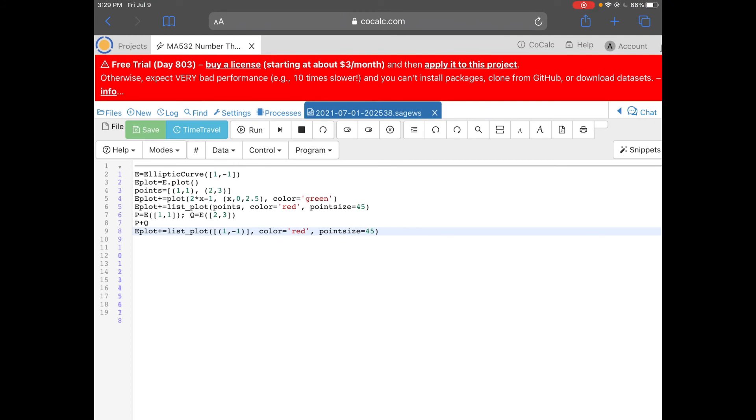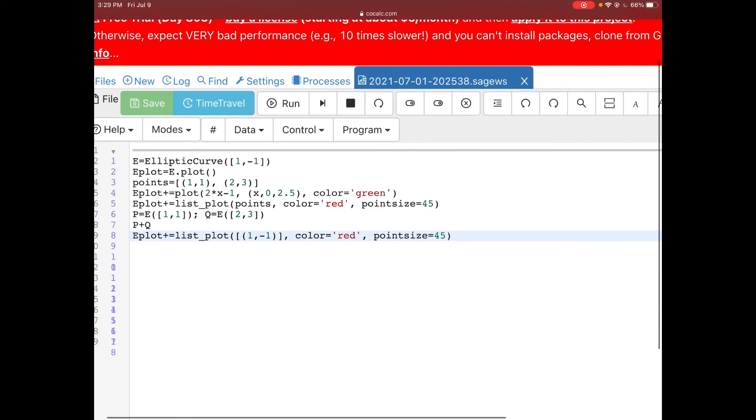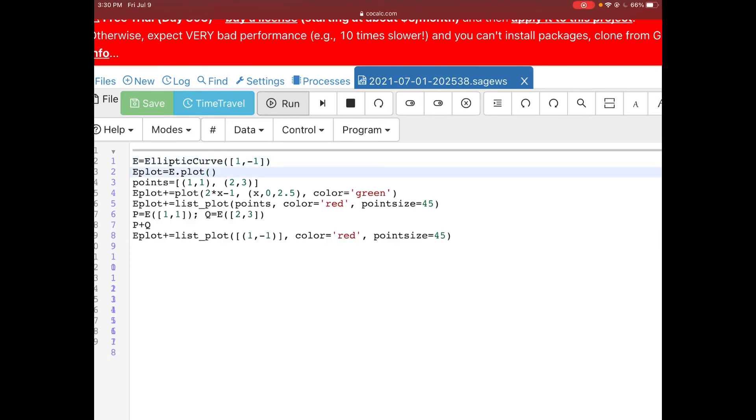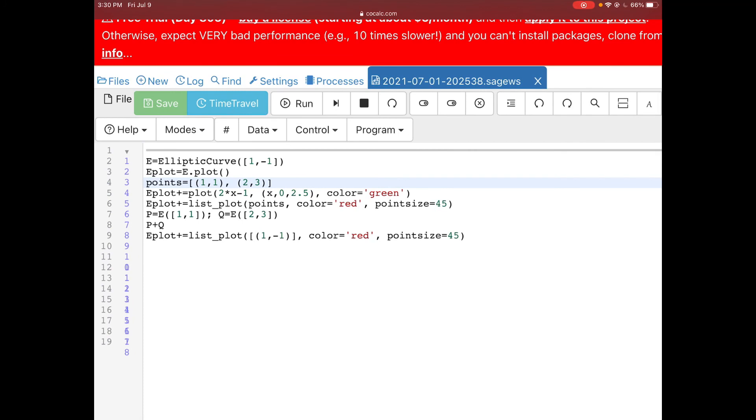All right, so I wanted to come over to SAGE and just show that this computation works and also how you put it in. So in line 1 here, I'm telling SAGE that here's my elliptic curve. Remember, a is 1 and b is negative 1. And what else? If you don't put anything else in there, it's assuming that you're working over the rational numbers. I'm going to make this object eplot, which is just the graph of my elliptic curve. What I'm going to do is add some things to it too. So in line 3, I want the points (1,1) and (2,3) to stand out. So I'll put them in this list called points. In line 4, what I end up doing is I'm going to also tack on the graph of the line between my two points, (1,1) and (2,3). Remember, that's the graph of 2x minus 1.